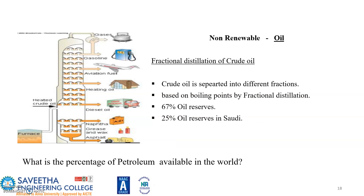The fractional distillation of crude oil separates it into different fractions based on boiling point. Approximately 67% is one fraction and 27% is another. A question asks: what is the percentage of dry oil? Please provide your answer.